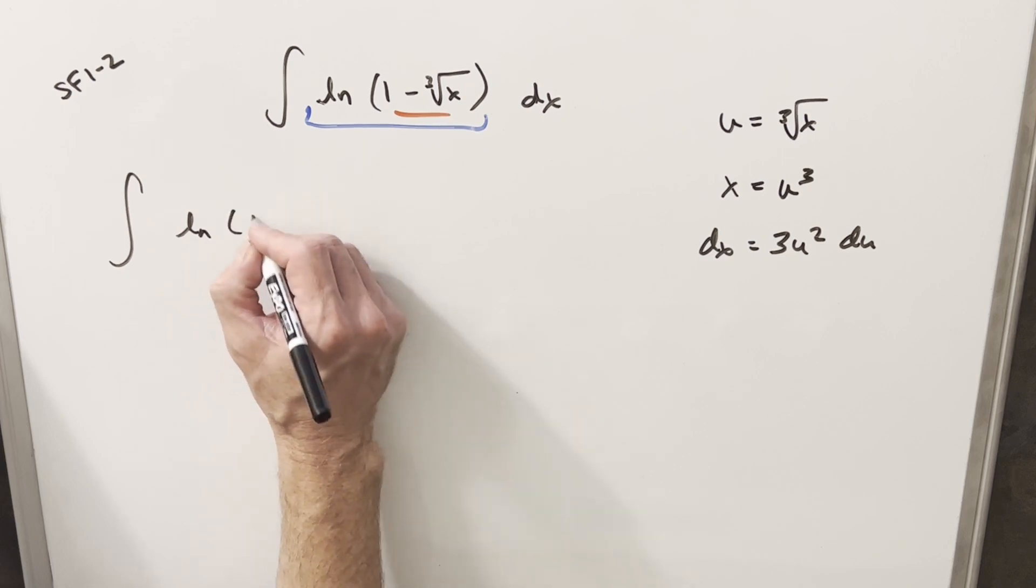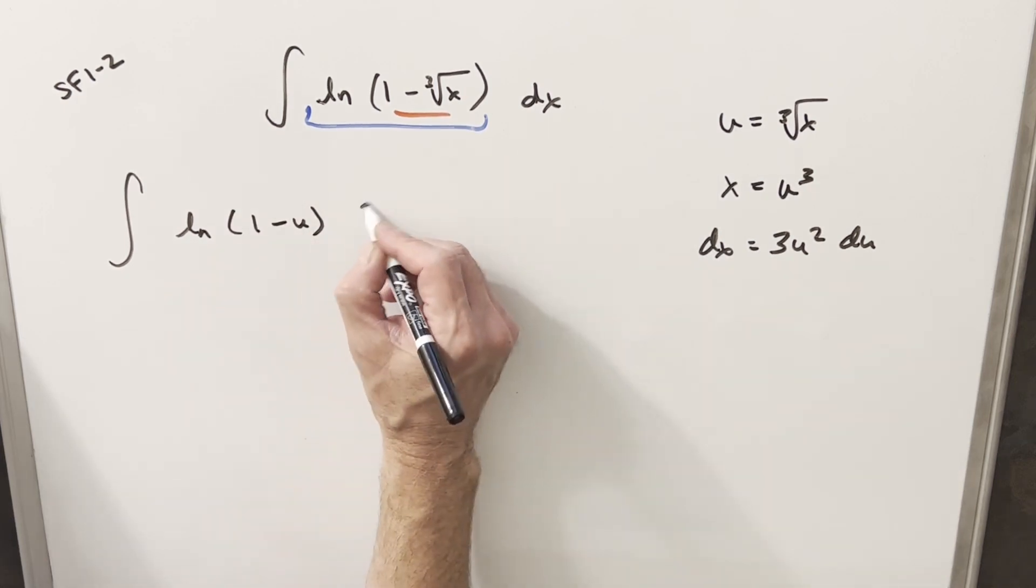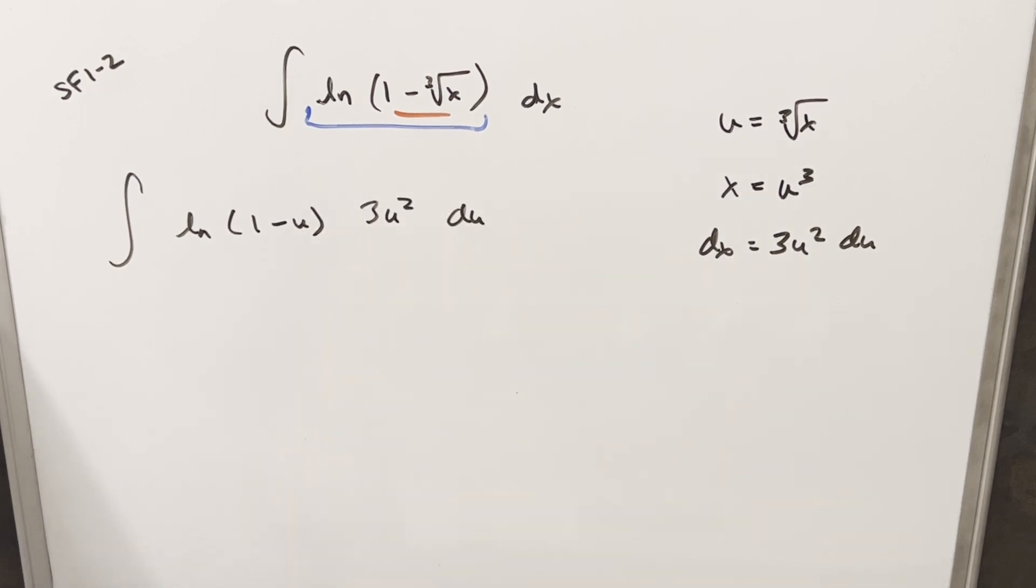And then I'll go ahead and we'll make this substitution. So first, we're going to end up here with natural log of 1 minus u. And then our dx becomes this, 3u squared du. And now at this point, I'm ready to do my integration by parts.